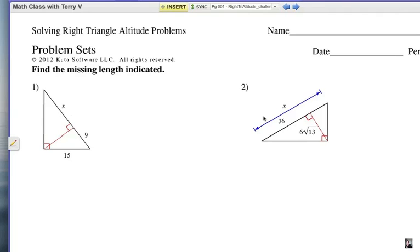And number two, x is the entire hypotenuse here. This part is 36 and we know that this altitude is labeled 6 radical 13. What you're going to have to do is remember that geometric mean proportion where the altitude is the geometric mean between the two parts of the hypotenuse. Let's take a look at the answers and how we get them.